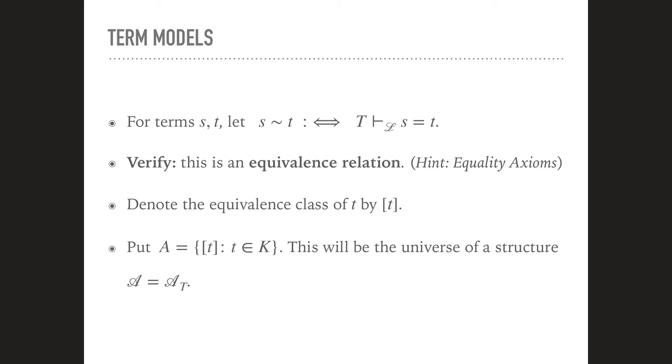And now instead of taking the terms directly, we actually collect the equivalence classes of a term in a set. Each term in K has an equivalence class and we collect that in a set A. And this now will be the universe of our structure. The structure A or also denoted by A sub T. So term models here refer simply to the fact that the universe of our structure will be given by the terms or rather the equivalence classes of terms. Equivalence given by what T tells us it can prove about equality of terms in there.